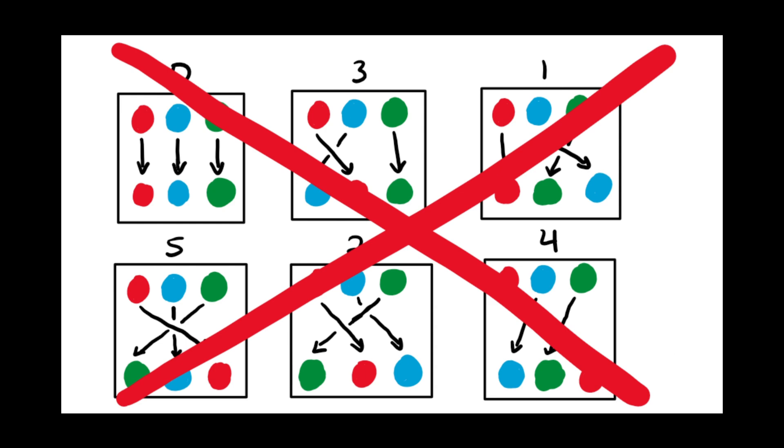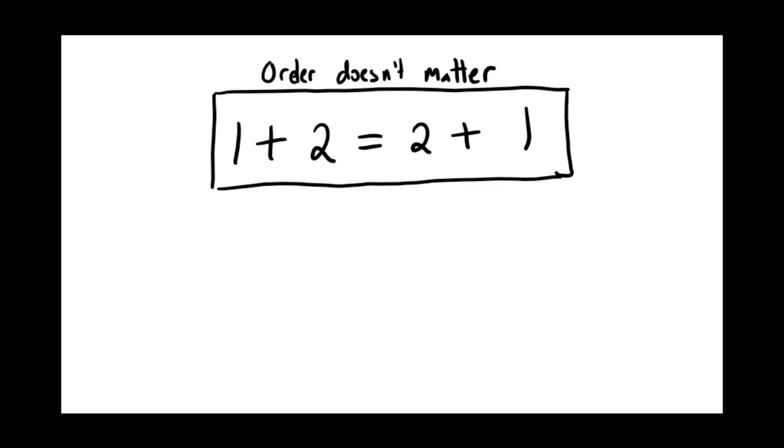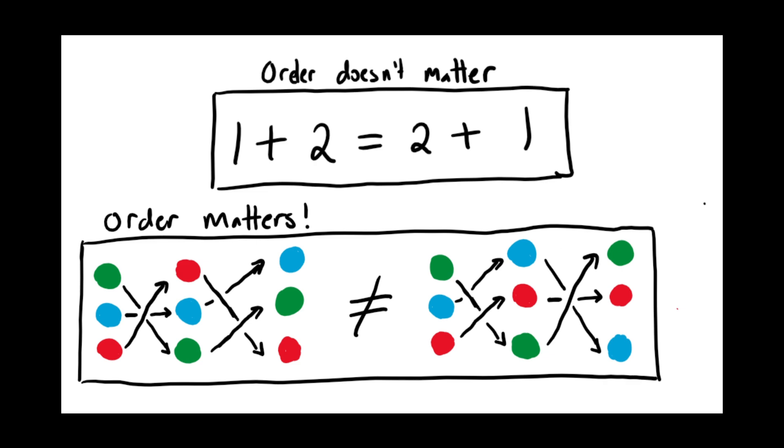This is mainly because for Z6, the order in which you add doesn't matter. But for the permutation group, the order in which you shuffle does matter. This detail about the structure tells us these two groups are mathematically different.